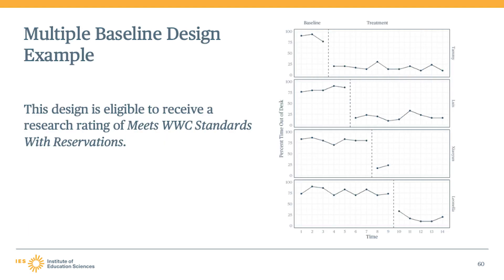Next, consider this multiple baseline design example. It has four tiers, each split into two conditions — one more tier than required according to WWC standards. The third tier's intervention phase has only two data points, which is one fewer than required for a finding from a multiple baseline design to receive a rating of meets WWC standards with reservations. However, the first, second, and fourth tiers all have at least three data points per phase, and the subset of those three tiers have six phases split into two conditions. If the design met all the other requirements, the finding would be eligible to receive a research rating of meets WWC standards with reservations.